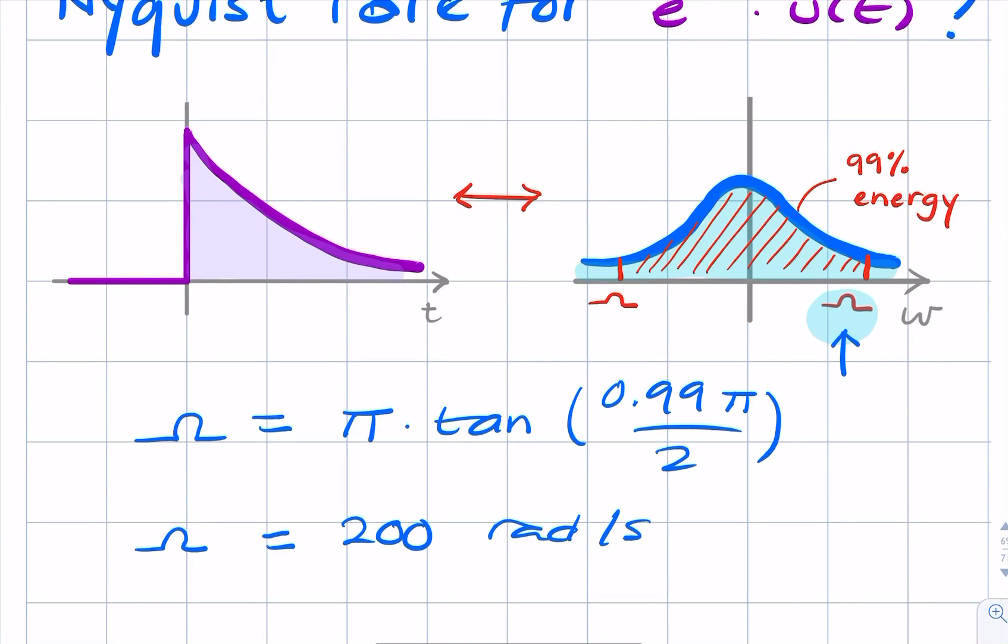So that is this value here. This value is 200 radians per second. So if we use that as an approximation for our bandwidth, then our sample rate will be 2 times that.